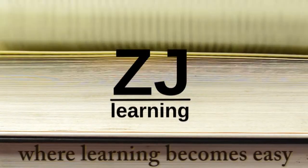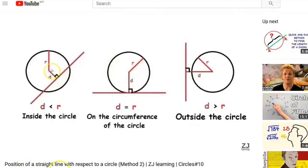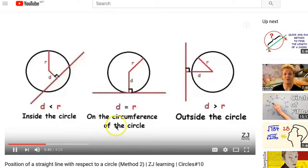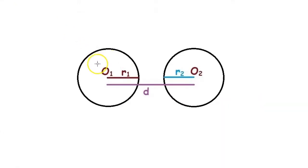Today we will learn how to find the relative location of two circles. Previously we learned how to determine the location of a circle and a straight line by comparing the length of the radius and the perpendicular distance from the center of the circle to the straight line. Now to determine the position of two circles, we compare the length of the radius of both circles and the distance between the centers of both circles.